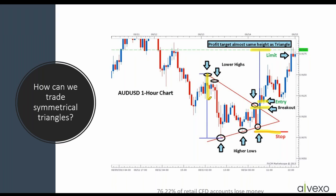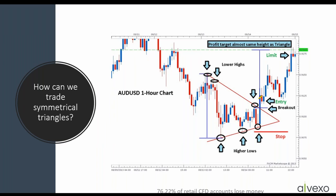If there is a major resistance level or support level between you and that target point — because sometimes a triangle base is very wide — you've got to reduce that target point below the next major resistance point, and then use that to calculate your risk-reward ratio. So now you've got your stop loss, your entry point, and your target. But you still haven't made a decision to do anything yet — you're just sitting there looking at your charts. You can't just blindly say you're going to buy or sell. This is called your breakout candle — the candle that broke out.